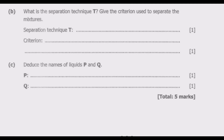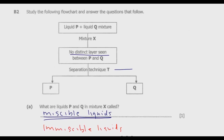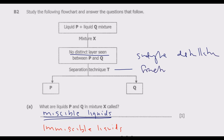Question B asks: what is the separation technique T? Give the criterion used to separate the mixtures. When you go back and see this separation technique used to separate miscible liquids that do not have a distinct layer, the method that we use is distillation techniques — so it could be either simple distillation or fractional distillation.